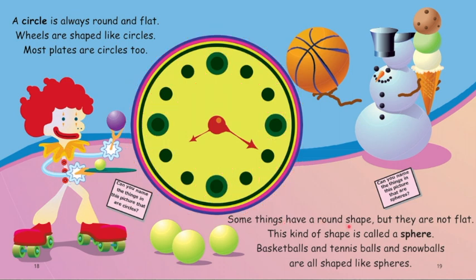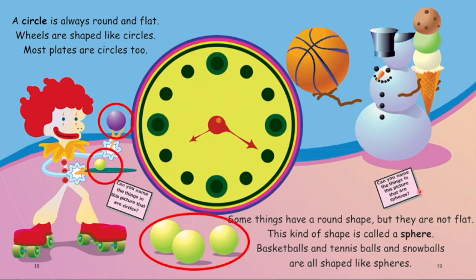Some things have a round shape but they are not flat. This kind of shape is called a sphere. Basketballs and tennis balls and snowballs are all shaped like spheres. Can you name the things in this picture that are spheres? Juggling balls, tennis balls, basketball, snowman's head, ice cream scoops.